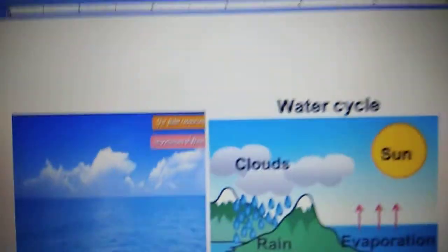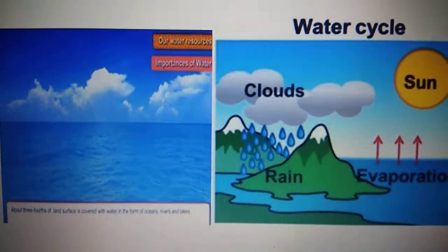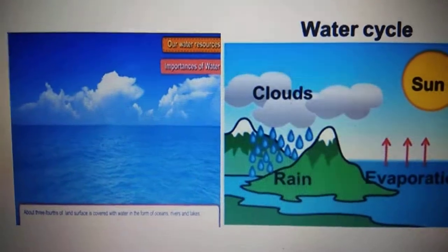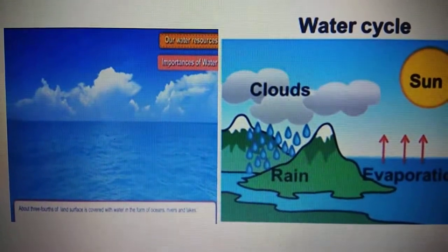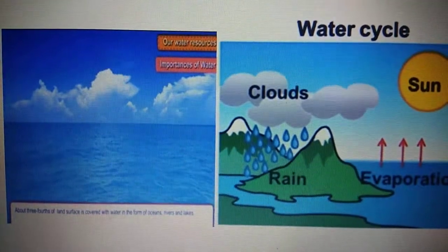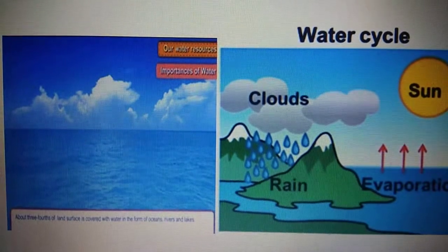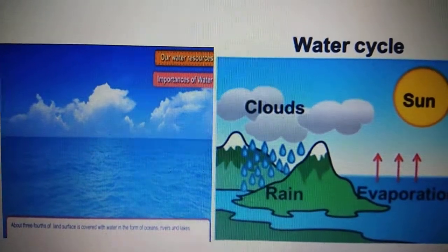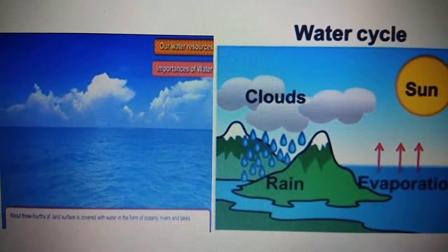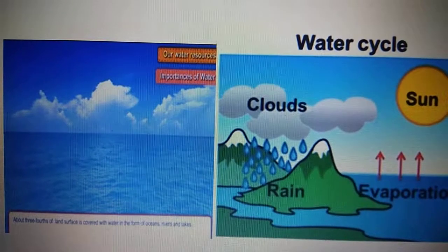Children, do you know how water was formed on the earth? When the earth was born, it was a huge ball of fire. When it started cooling down, all the gases went into the atmosphere, cooled and precipitated as rain, and filled up all the depressions in the earth, which formed our oceans and seas. This water was formed almost millions of years back, and we still use it.